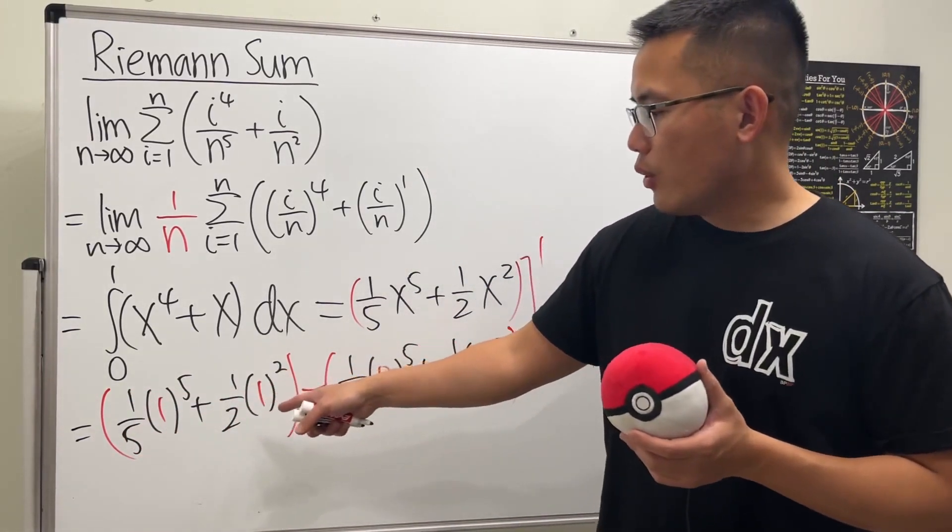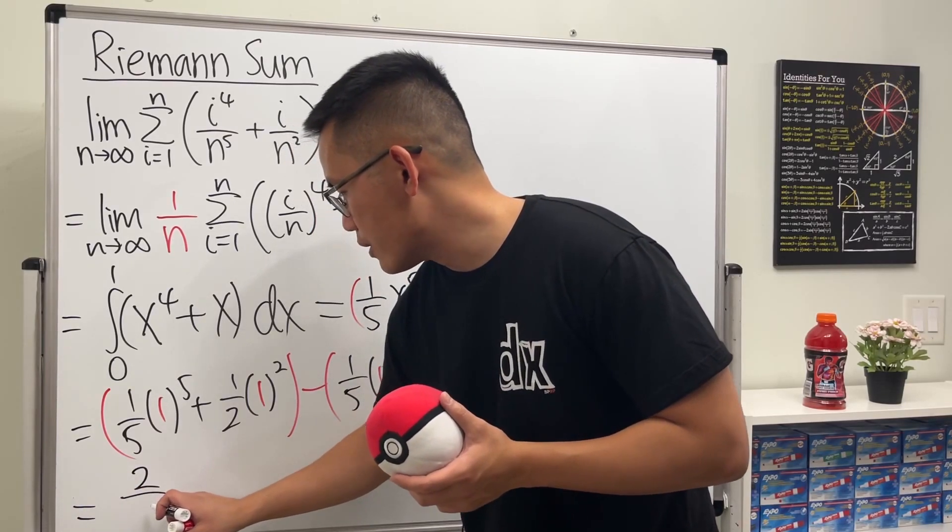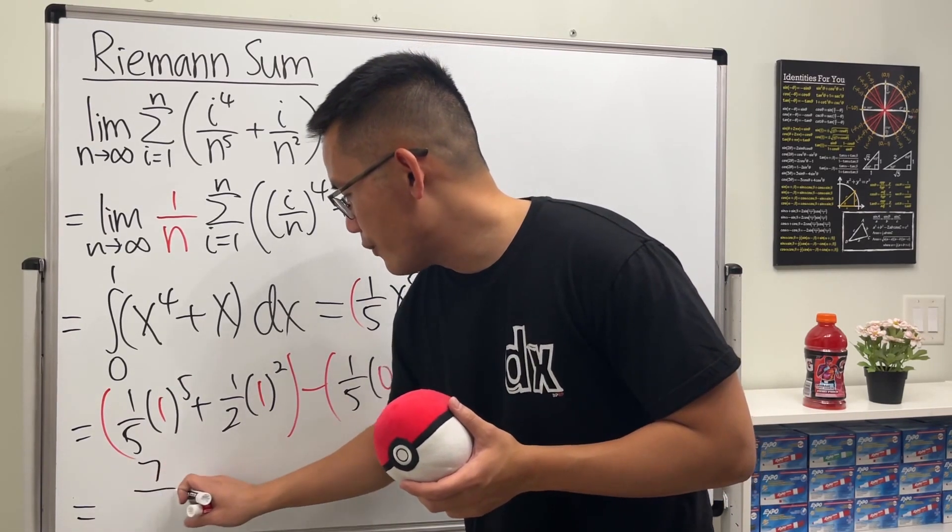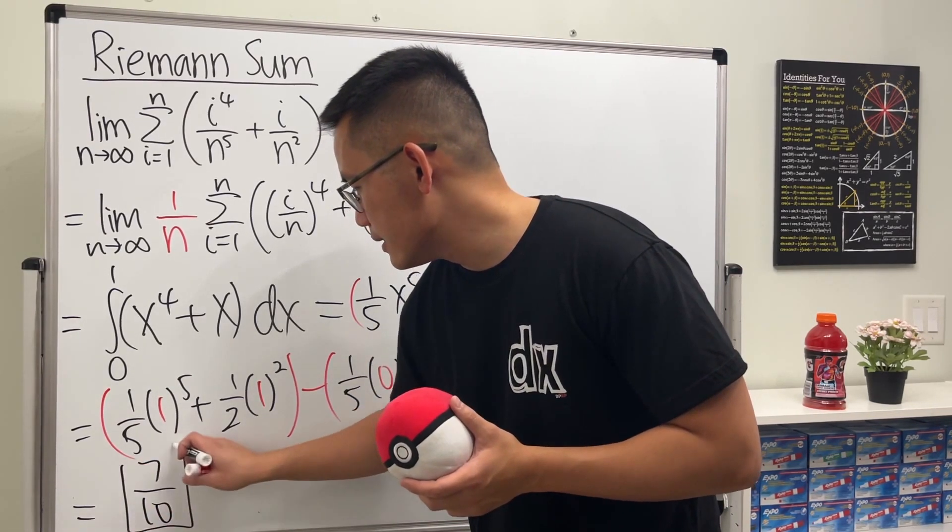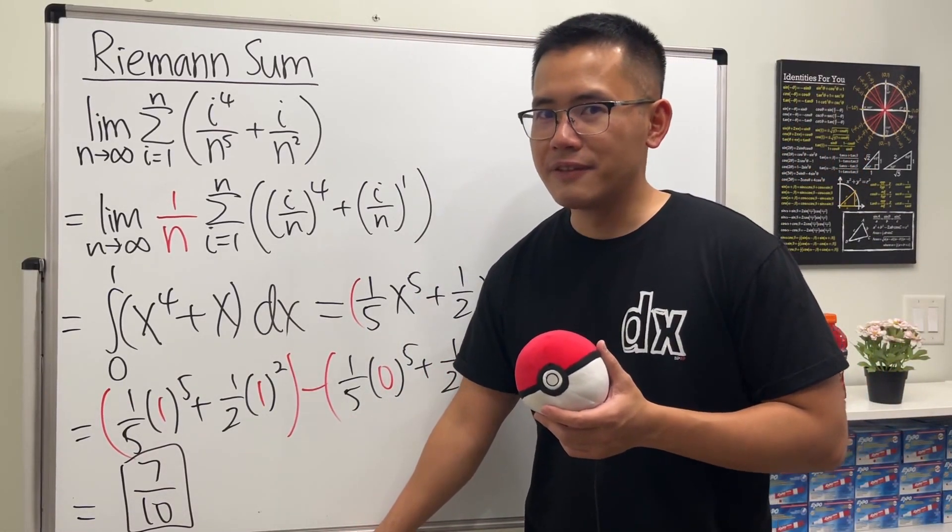Altogether you will just get two over... no, sorry, seven. Right, seven over ten.